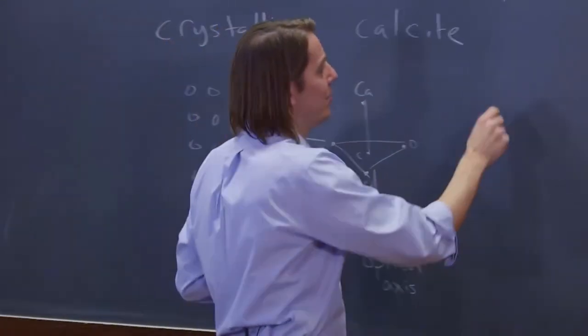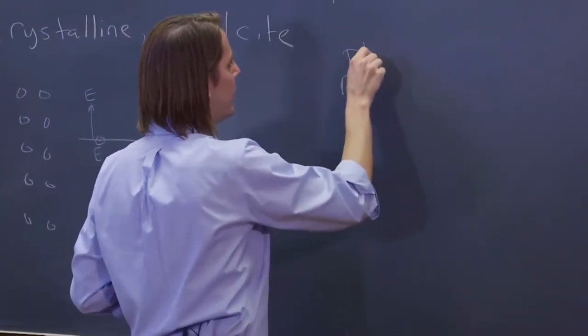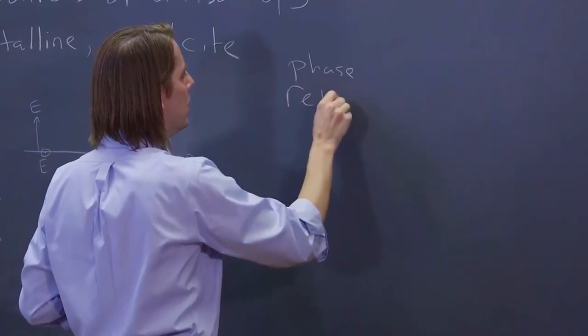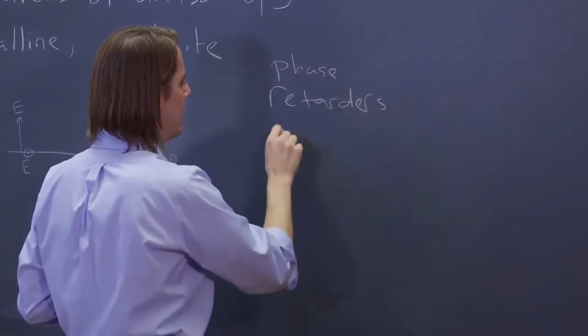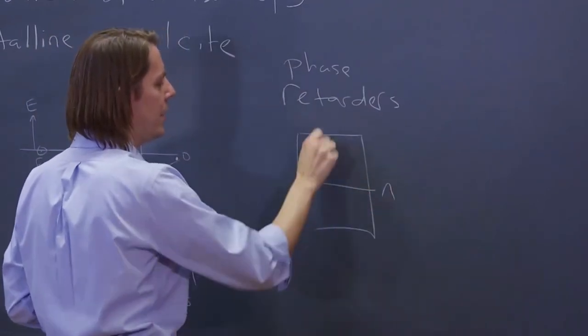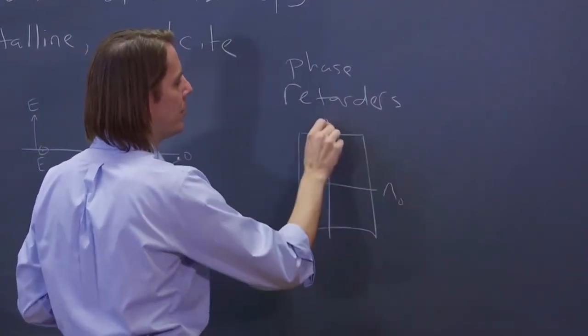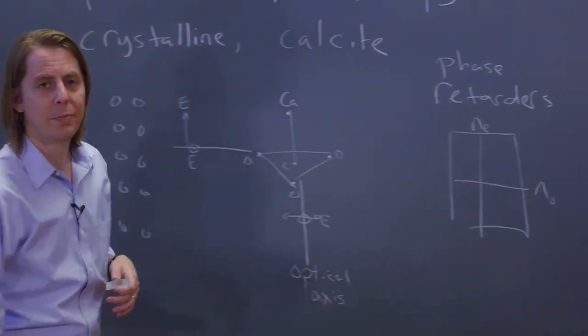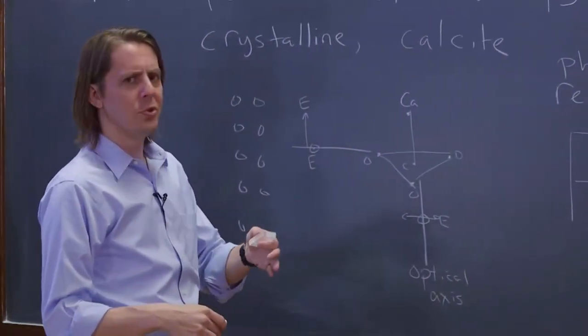And this sounds kind of like, remember we had our phase retarders. You know, if you have the one right direction that you come in, you have one in this way and you have one in that way and you can call them ordinary and extraordinary if you want. But that doesn't clearly lead to two images.